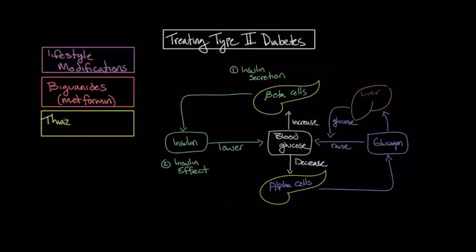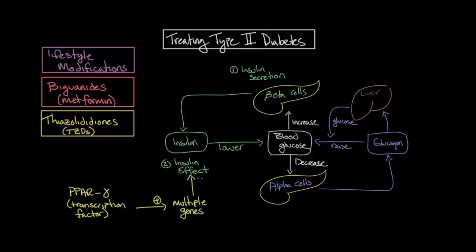The next group of medications have a somewhat difficult name. They are the thiazolidinediones, or TZDs for short. Similar to metformin, TZDs also work to increase type 2 diabetes by acting on the second step to increase insulin sensitivity. However, the means by which they do so is different. TZDs activate a receptor known as the peroxisome proliferator activated receptor gamma, or PPAR gamma for short. PPAR gamma is a transcription factor for multiple genes that increase insulin sensitivity in adipose, muscle, and liver cells. As such, by activating PPAR gamma, TZDs indirectly increase insulin sensitivity.